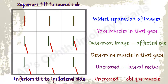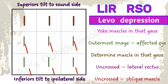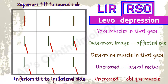Next example. The first thing we notice is that there is a vertical separation of images, so this is a vertical muscle palsy. Maximal separation of images is in levo depression. The yoke muscles acting in levo depression are the left inferior rectus and the right superior oblique. Red is the vertically outermost image, so the involved muscle belongs to the right eye — this is a right superior oblique palsy. This is an uncrossed diplopia, so the oblique checks out. The tilt is towards the left or sound side, so superior checks out.